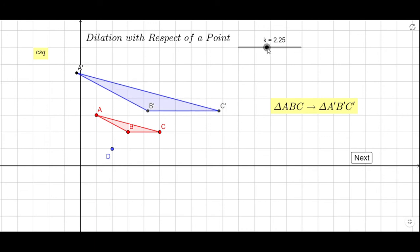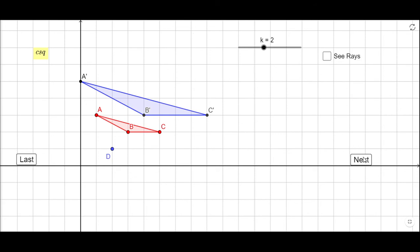I'm gonna go back to k equals two, the original picture we started with, and then I'm gonna click next. When I click see rays you will see the rays that connect the vertices of the pre-image and the image: A to A prime, B to B prime.